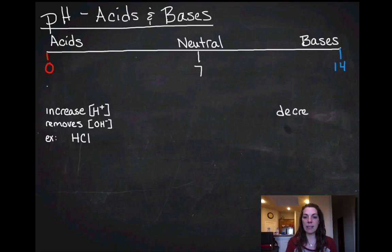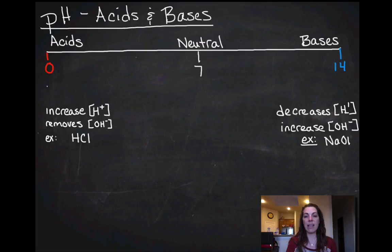Bases have a decrease in hydrogen ions and they have an increase in hydroxide ions. And an example of a base is sodium hydroxide. So acids have the H+, bases have the OH-.